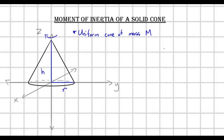Hello there. In this video, I want to calculate the moment of inertia of a solid, uniform cone of mass M. It's going to have some height H and some radius, which I'll call capital R. And it has an axis of rotation passing straight through the tip of the cone, which is the z-axis here.